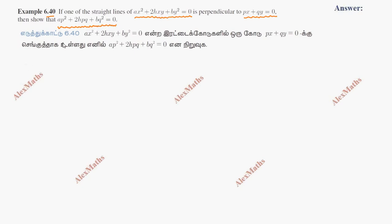Now, if we look at the combined equation, we have ax² plus 2hxy plus by² equal to 0.